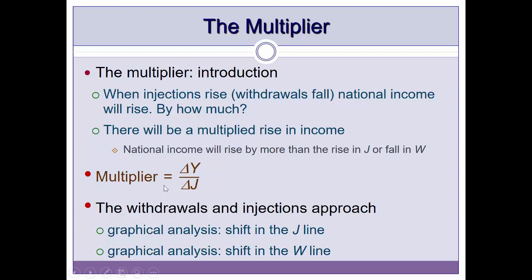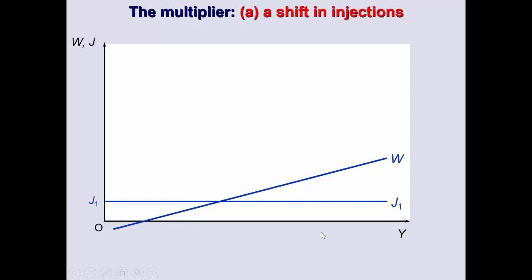The multiplier is calculated by dividing the change in income by the change in injections (J) — it tells us by how much a rise in J causes a change in income. Let's look at two ways of calculating it, or two graphical analyses that show us the magnitude of the multiplier: a shift in the J line and a shift in the W line. These are two equivalent cases.